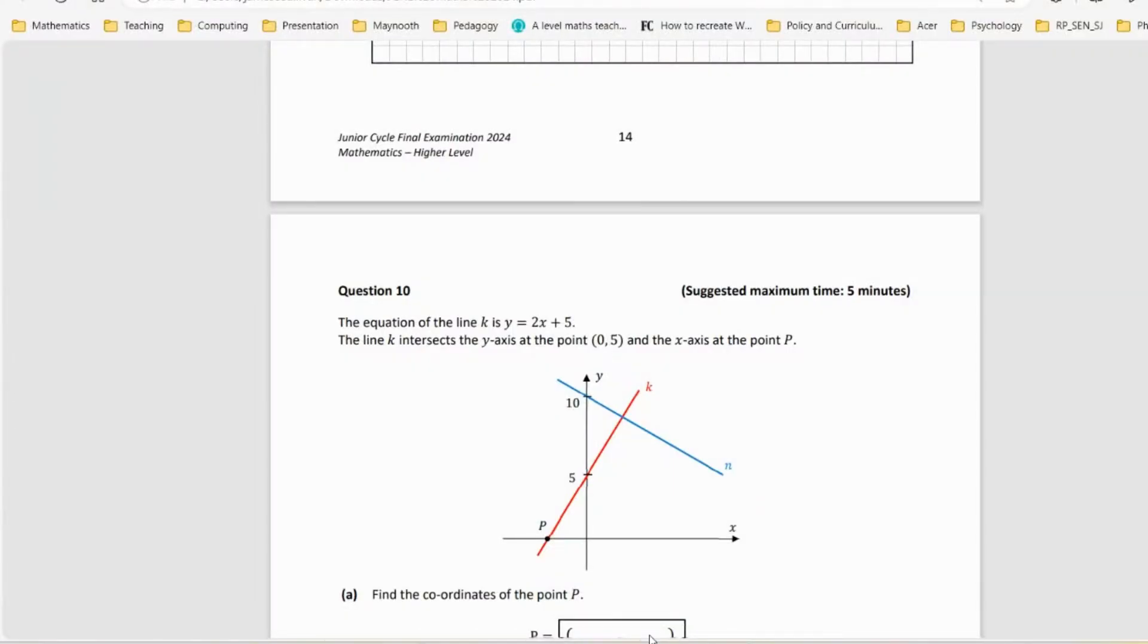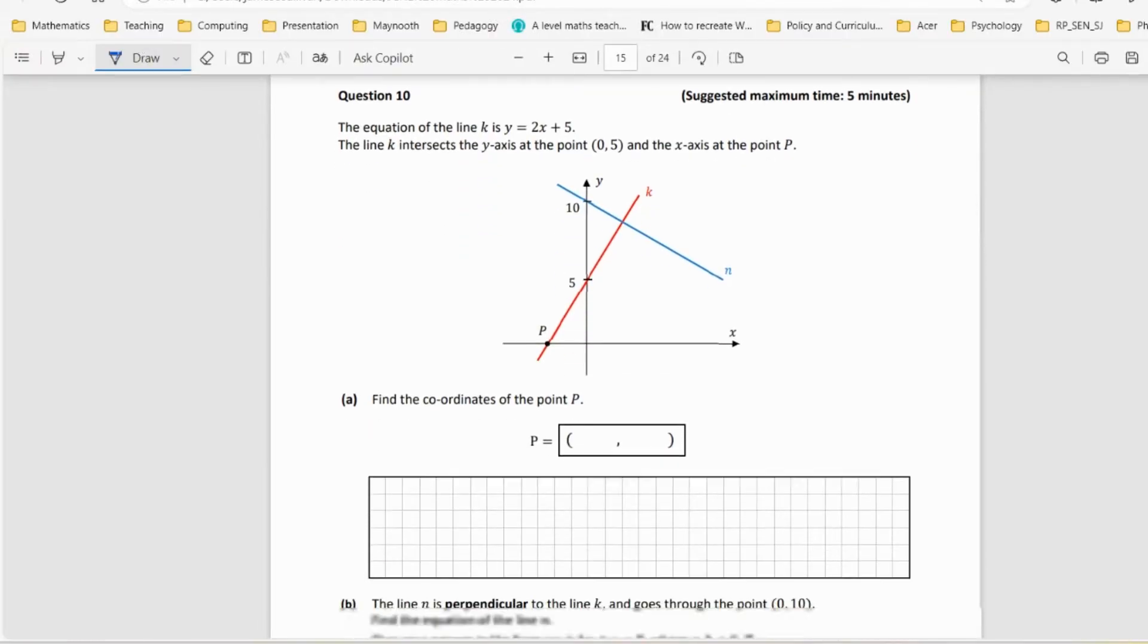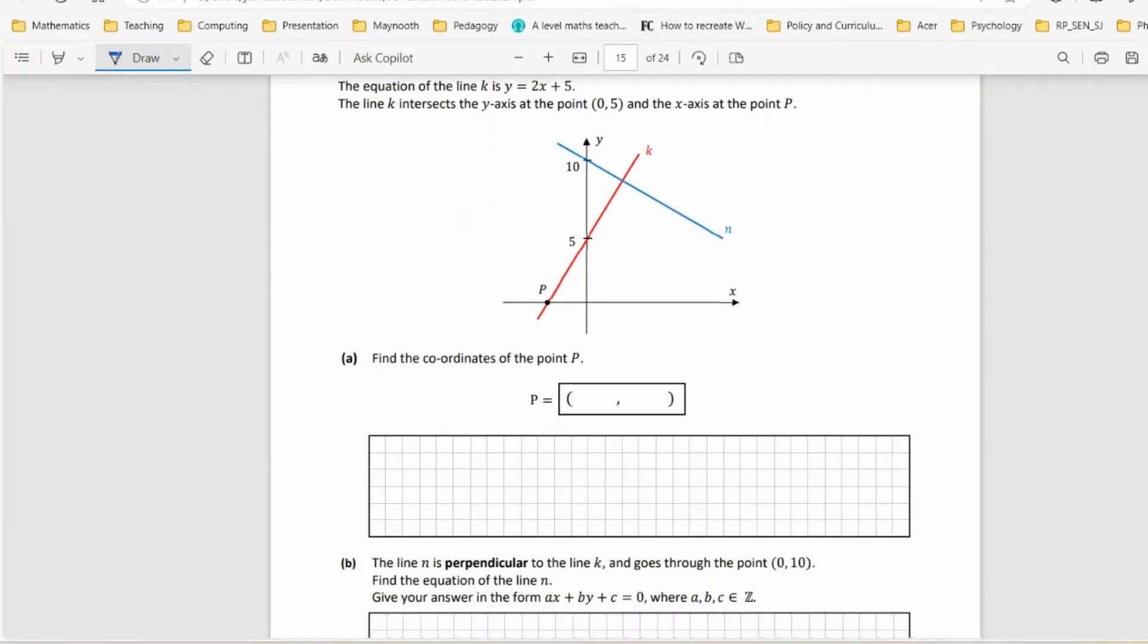Alright, question 10. Let's have a look. The equation of line k is y = 2x + 5. This intersects the y-axis at point (0, 5) and the x-axis at point P. Find the coordinates of point P.